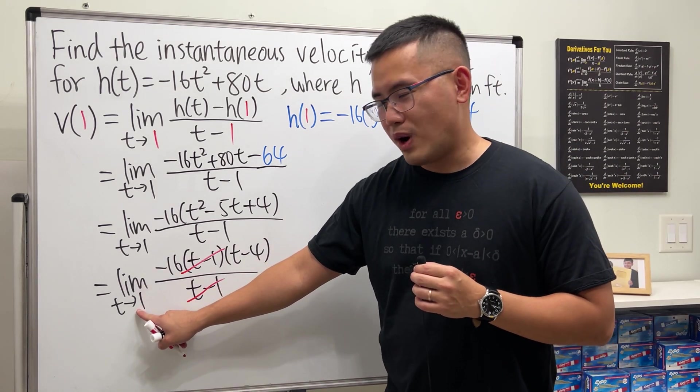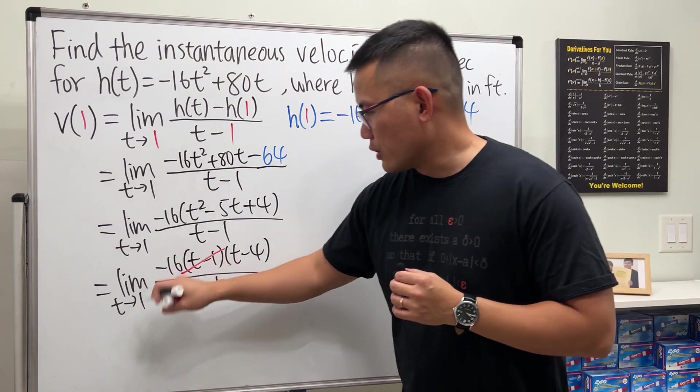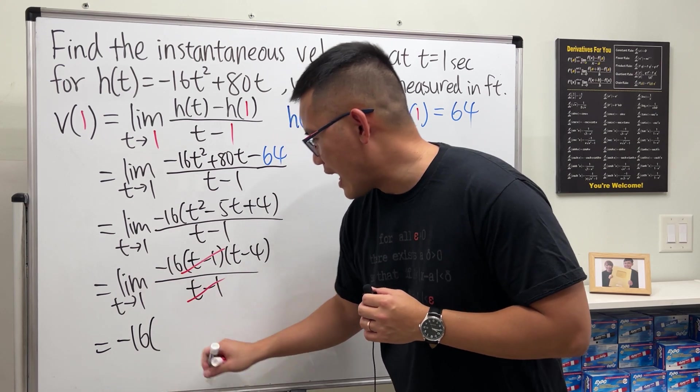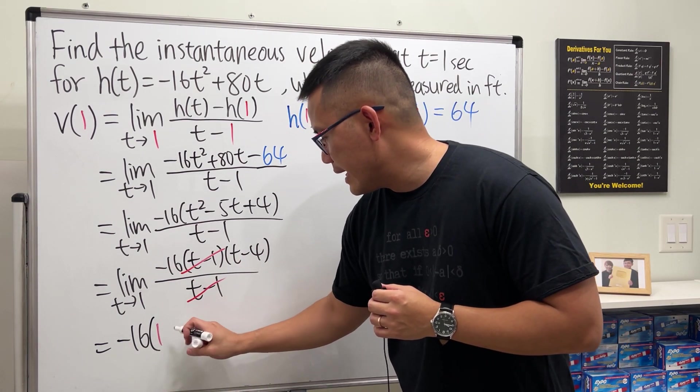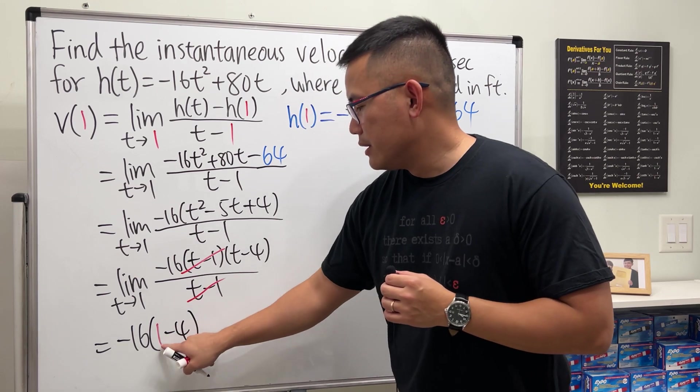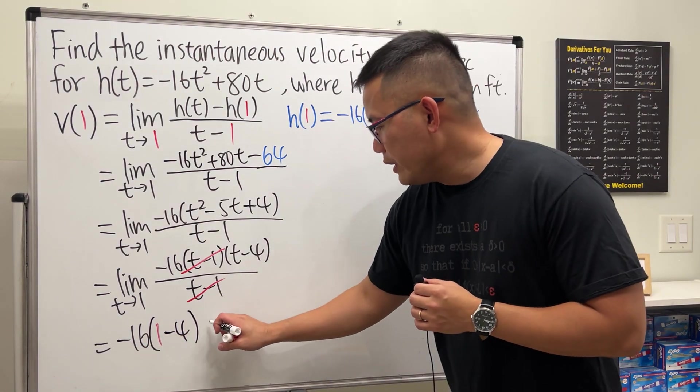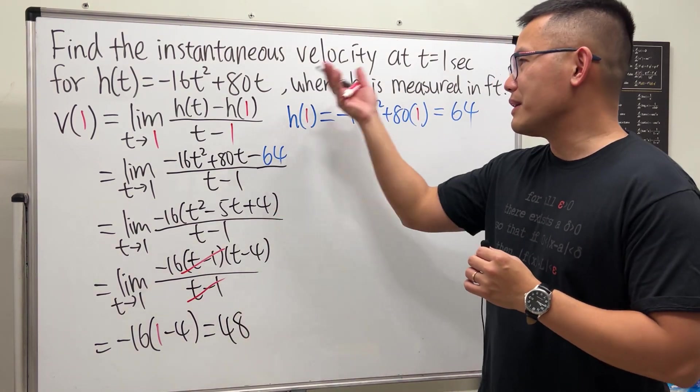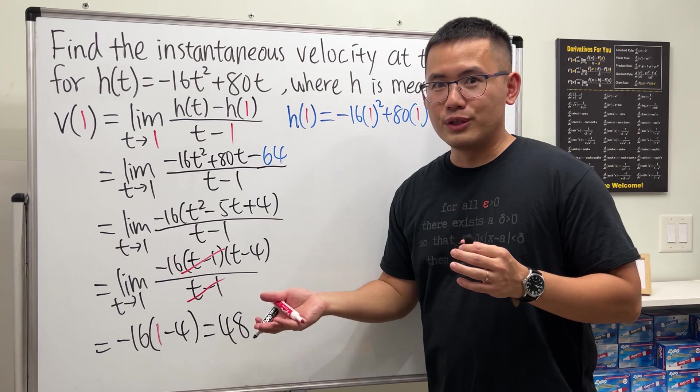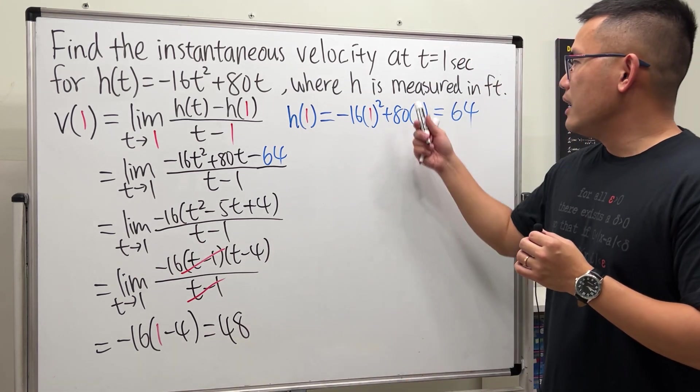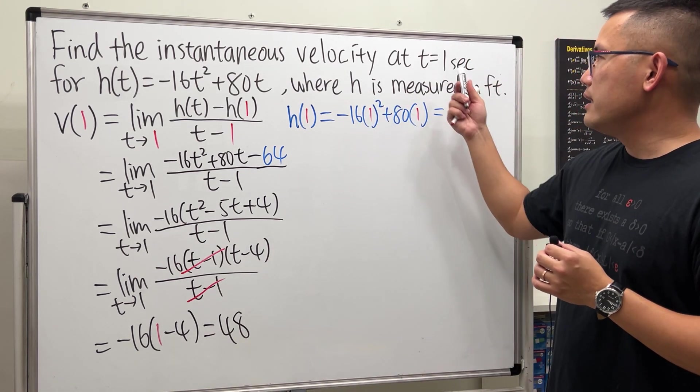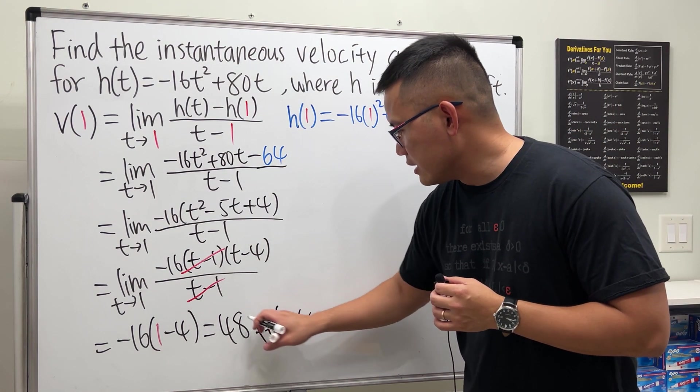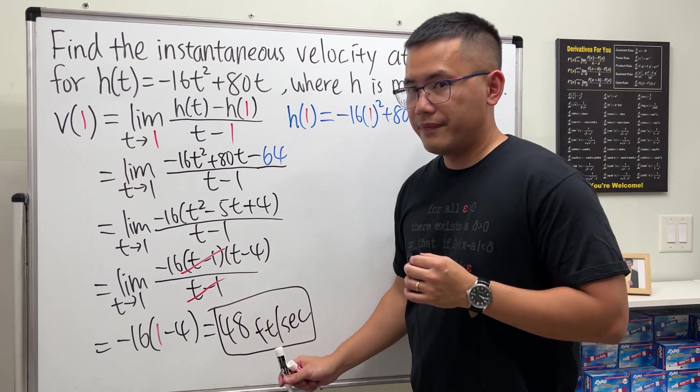Now, put the 1 to this t. So no more limit sign. Just go ahead and write down the negative 16 times 1 here. And then minus 4. This is negative 3 times negative 16. We get positive 48. 48, that's pretty much it. But this is a situation question. So attach a unit. H is measured in feet. And then t is second. So this is feet per second. And then we are done.